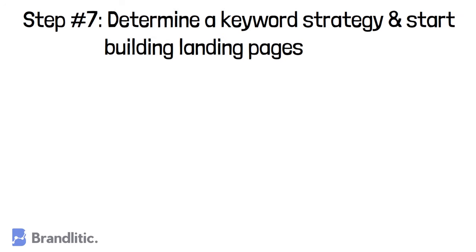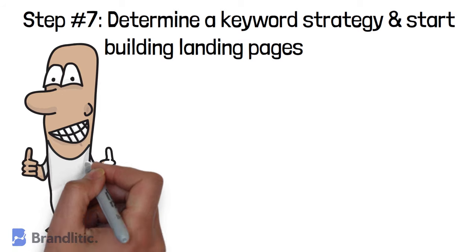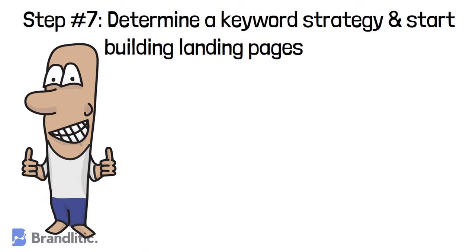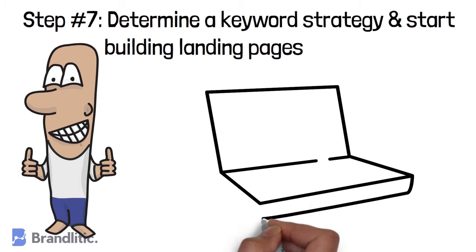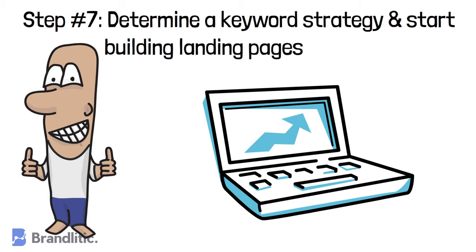Step 7: Determine a keyword strategy and start building landing pages. Based on the data you have collected, you can develop a keyword strategy. By now you should have a spreadsheet with a substantial amount of keyphrases and information about your competition and the search intent of your audience. Think about: how does my website hold up compared to websites in the search engine? Are you of equal size and marketing budget? Then focus on head terms. If not, try using more long tail keywords first. Once you've finalized your target keywords, it's time to plan your content for landing pages.